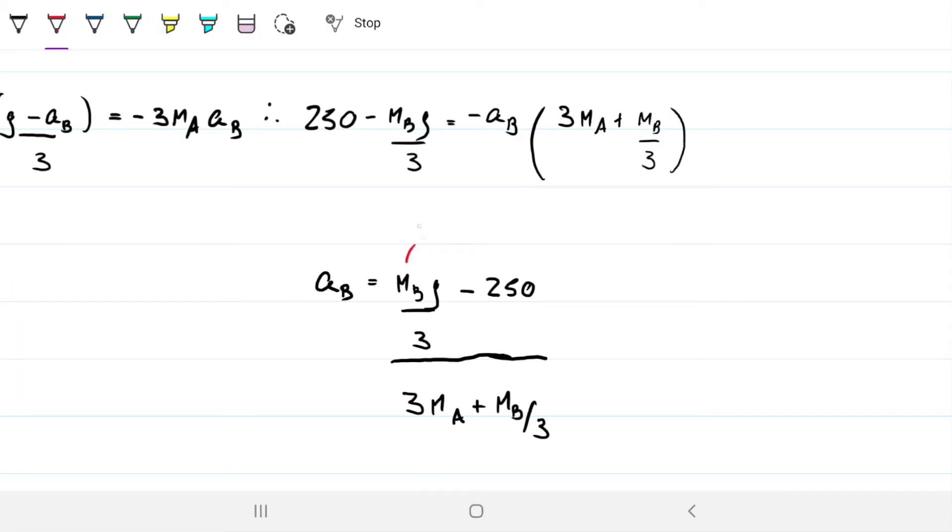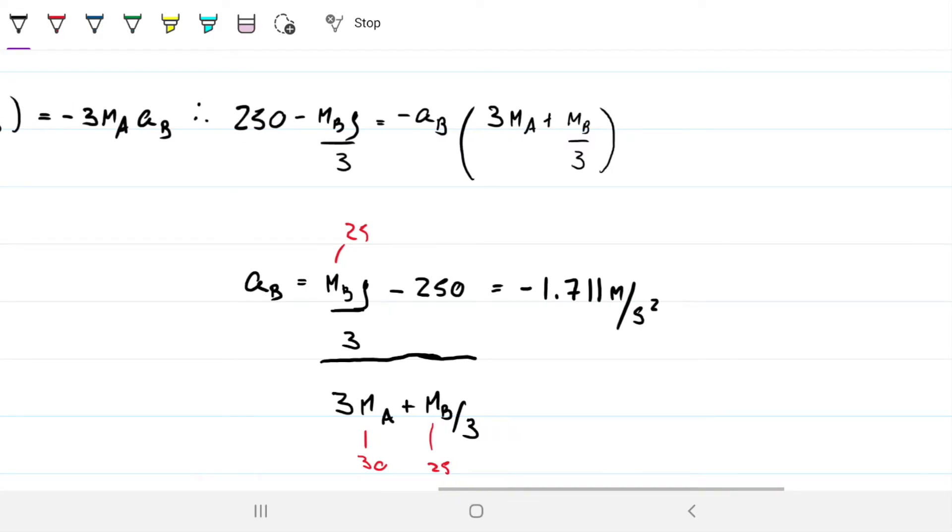I can go ahead and do this over here. We have 250 minus mass of b times g minus ab divided by three. So just substituting the tension there. And this has to be equal to minus three times mass of a times ab. So let's speed up as I solve this part here. Cool. So this guy here, mass of b is 25, mass of a is 30, mass of b is 25. We have everything we need. Plug the numbers in and we get that the acceleration of b is negative 1.711. Cool beans. So this makes sense, because we expect b to go upwards, not downwards. So we decided that downwards is positive. So this is telling us that b, acceleration of b is upwards. So b is accelerating upwards.